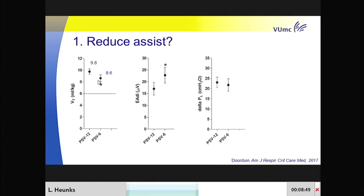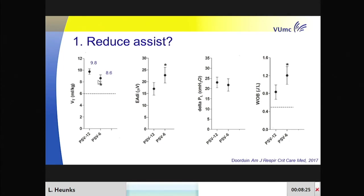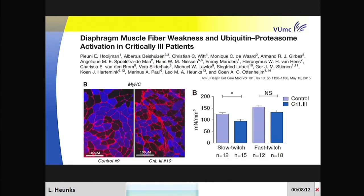But at the same time, the effort by the diaphragm—as shown by the electrical activity—actually increased. Therefore, the change in transpulmonary pressure was not significantly different. We decreased ventilator support, and the patient pulled harder. That might be a problem: normal work of breathing is around 0.4–0.5 joules per liter. These patients already had an elevated work of breathing of 0.8 joules per liter at 12 cmH₂O of pressure support, and decreasing inspiratory support made work of breathing go up further.